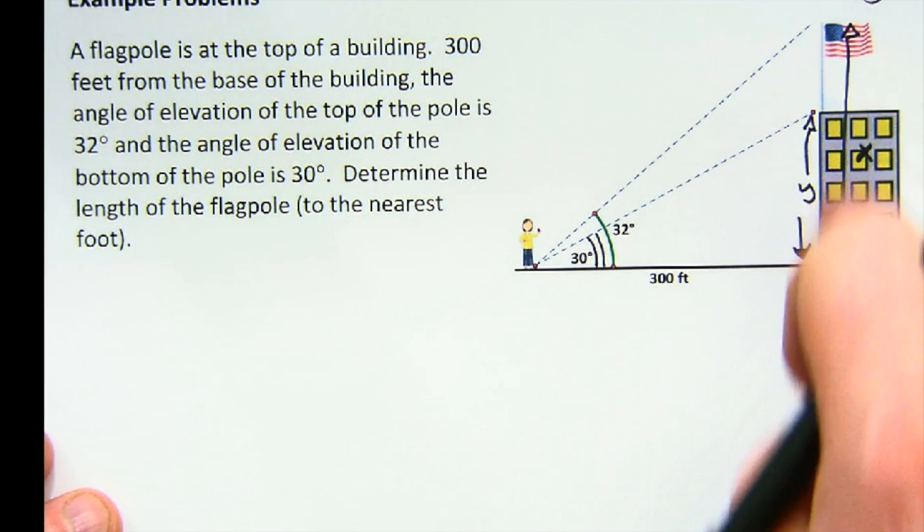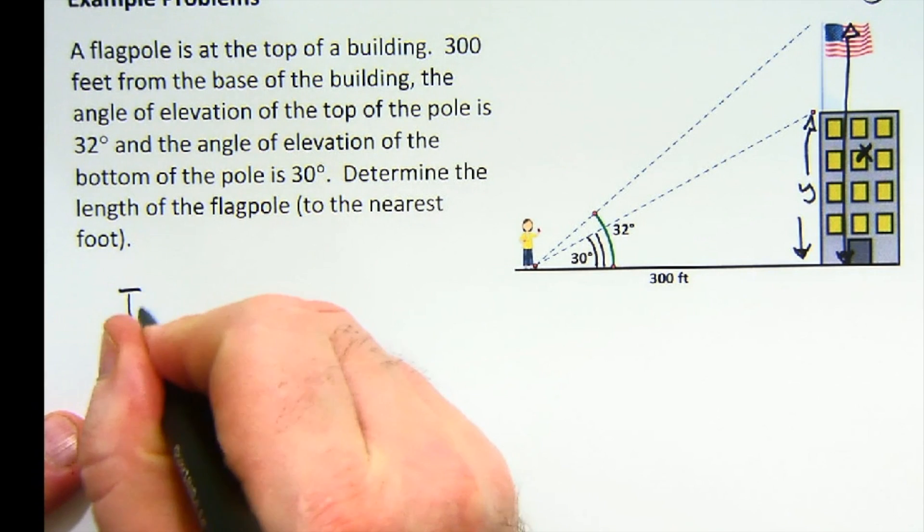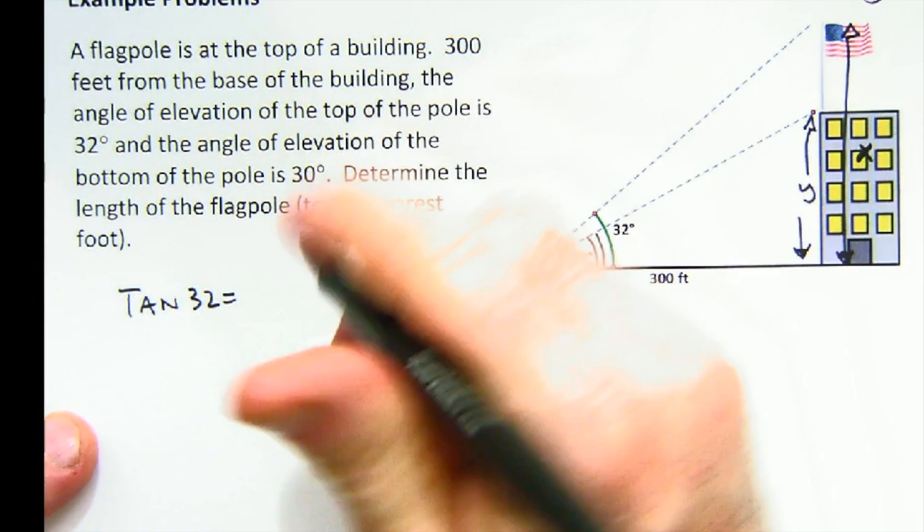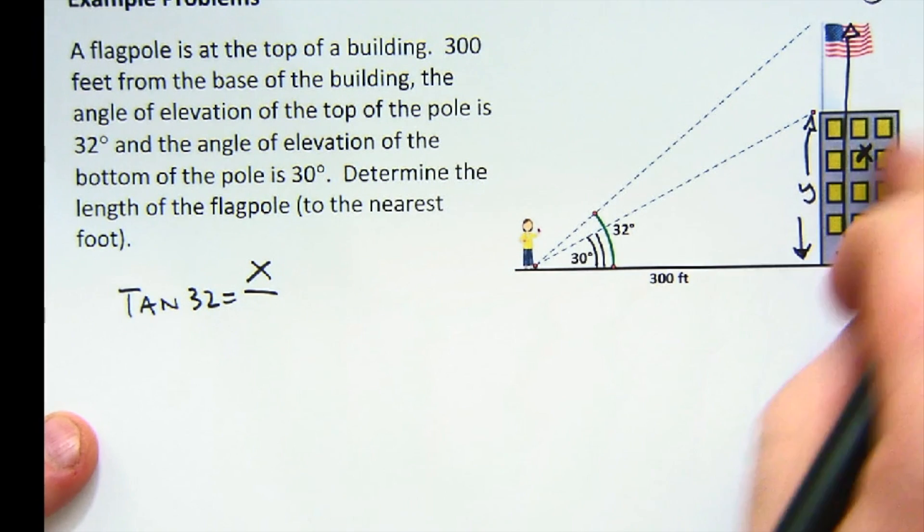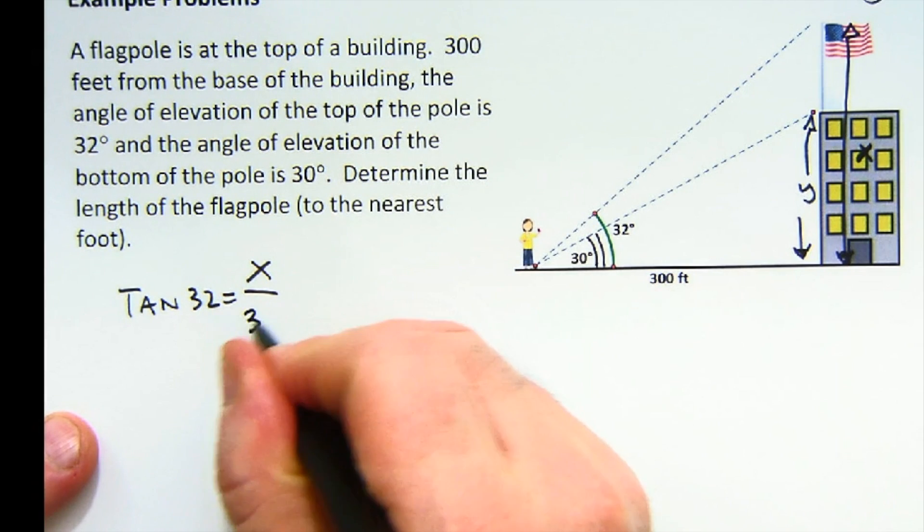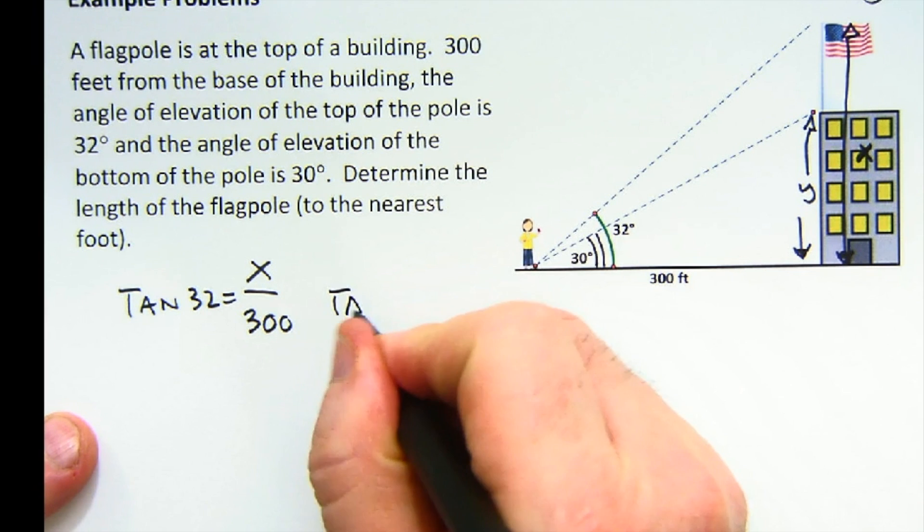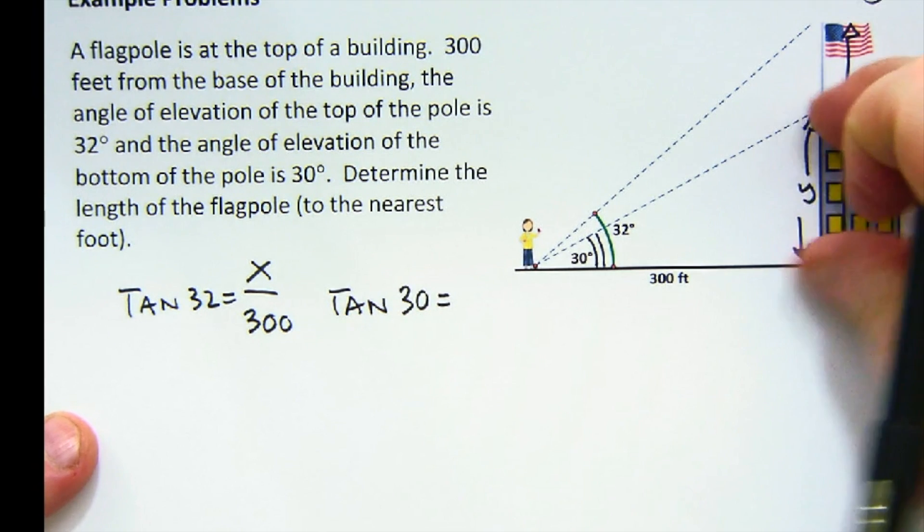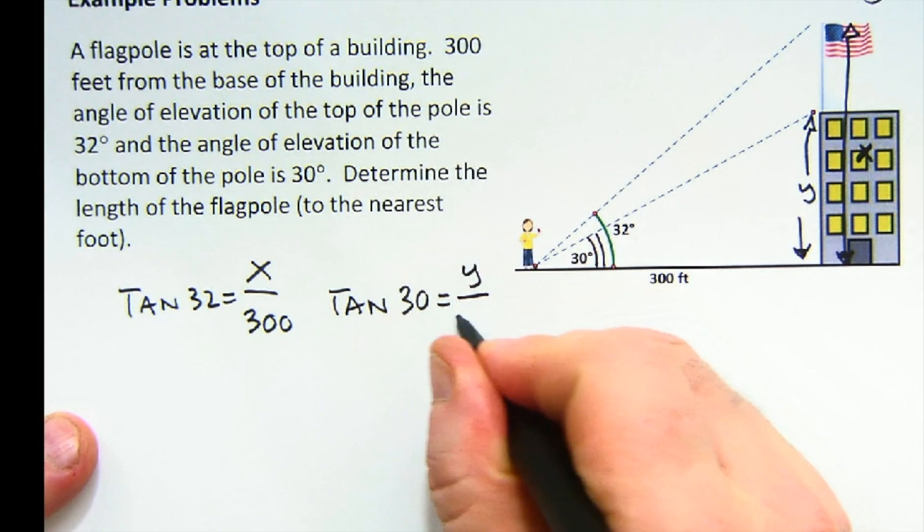So let's do the big x side here. That would be the tangent of 32 is the opposite x over the adjacent 300. And then the other setup would be the tangent of the smaller angle 30 would be its opposite y over its 300.